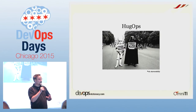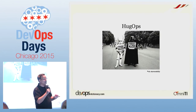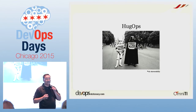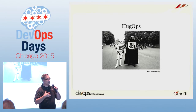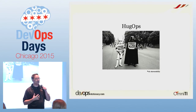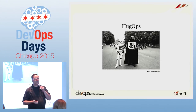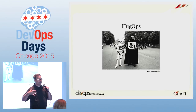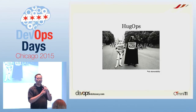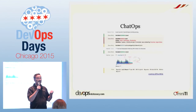Hug Ops. This is a meme that you may have seen, especially in the Chef community. The idea is that whenever something bad happens — be it professional or personal — we should share empathy for each other and treat each other like human beings. If you find out that somebody's dog just died, maybe don't ream them over some problem they had. We should be blameless about these things. Hug Ops means we treat each other like human beings because stress causes errors — stress makes everybody horrible.